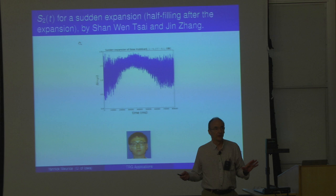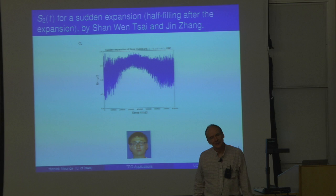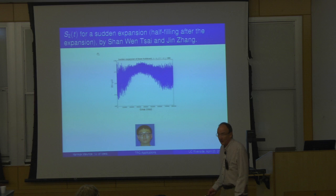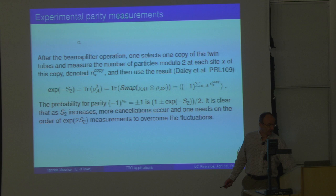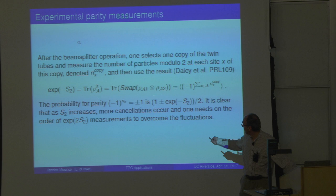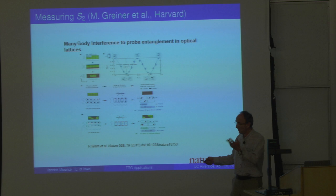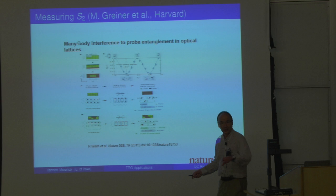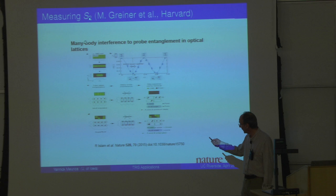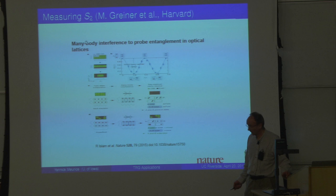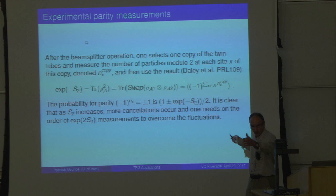Question: what is the advantage of the second-order Rényi entropy compared to the von Neumann entropy? The von Neumann entropy is the limit of the Rényi entropy as n goes to 1. In the experiment, you take two copies and measure rho squared. You could measure S3 by making three copies, but you cannot take the limit n going to 1 experimentally — you can do it mathematically, but experimentally you are limited to n equal to 2 or higher. You can generalize to many copies, but you have to work harder on the phases.